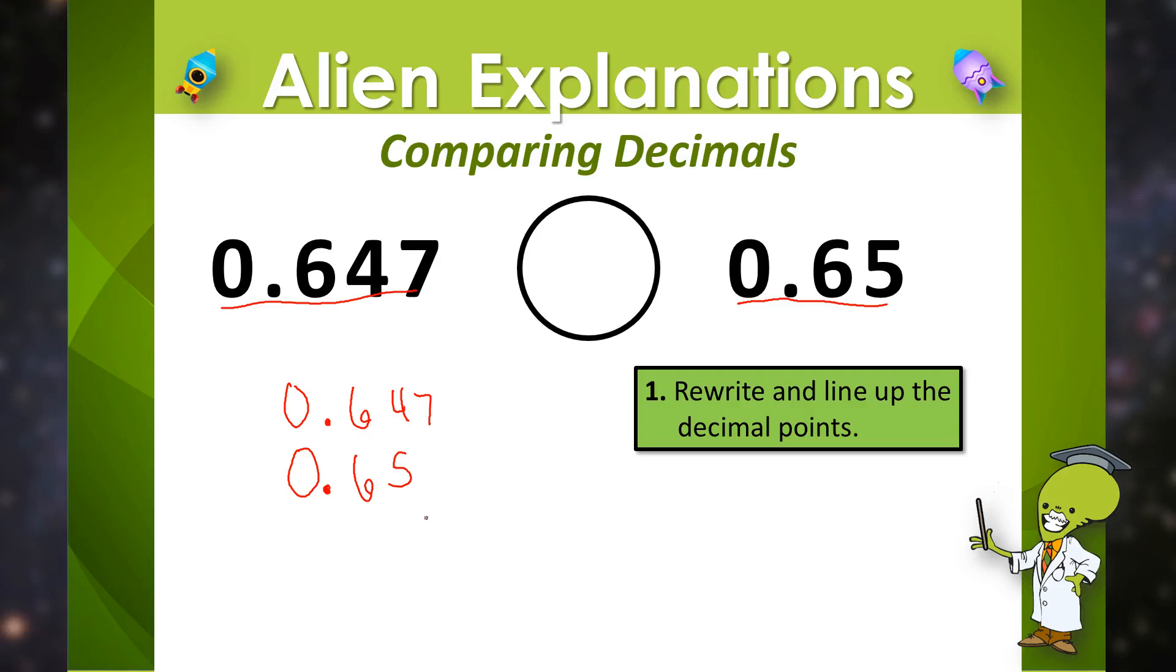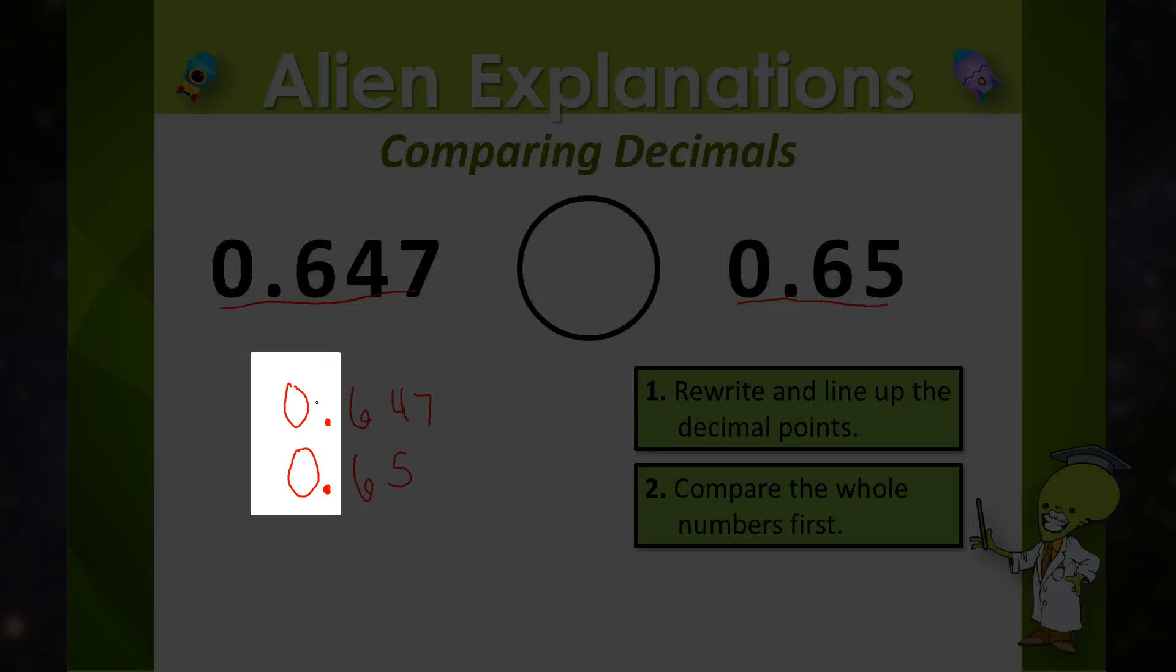Now the next thing we are going to do is compare the whole number spots. So just look in front of the decimal. In front of the decimal I have zero and zero. That's the same.